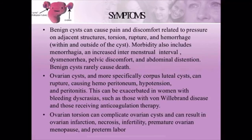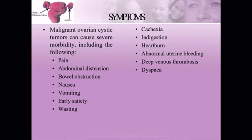Malignant ovarian cystic tumors can cause severe morbidity. Symptoms include pain, abdominal distension, bowel obstruction, nausea, vomiting, early satiety, cachexia — meaning muscle wasting and weakness — indigestion, heartburn, abnormal uterine bleeding, deep vein thrombosis, and dyspnea. All these conditions can arise if the woman is having a malignant ovarian cystic tumor.